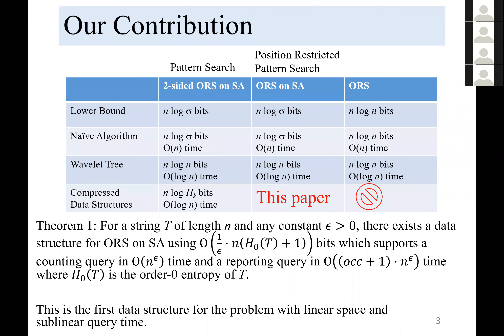Our contribution is as follows. We consider three related problems: orthogonal range search (ORS), ORS on suffix arrays, and two-sided ORS on suffix arrays. There is an inclusion relation among them: ORS contains ORS on suffix arrays, and ORS on suffix arrays contains two-sided ORS on suffix arrays.